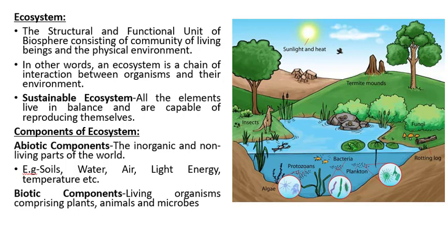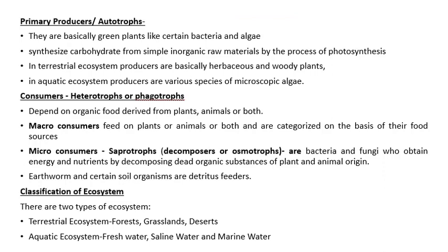Next are biotic components, which are living organisms that comprise plants, animals, and microbes. Next are autotrophs, which are the primary producers. Primary producers are basically green plants, certain bacteria, and algae. They synthesize carbohydrates from simple inorganic raw materials by the process of photosynthesis. In terrestrial ecosystems, producers are basically herbaceous and woody plants. In aquatic ecosystems, producers are various species of microscopic algae.